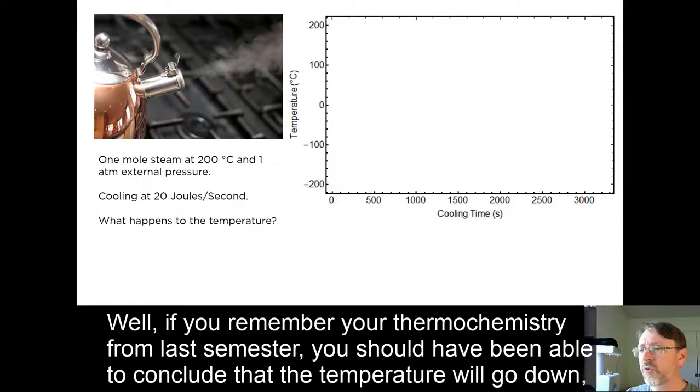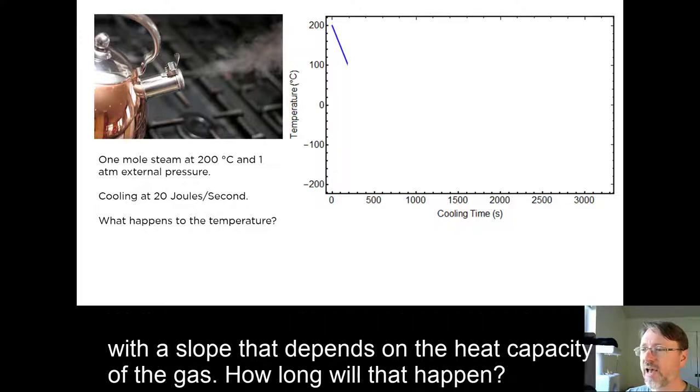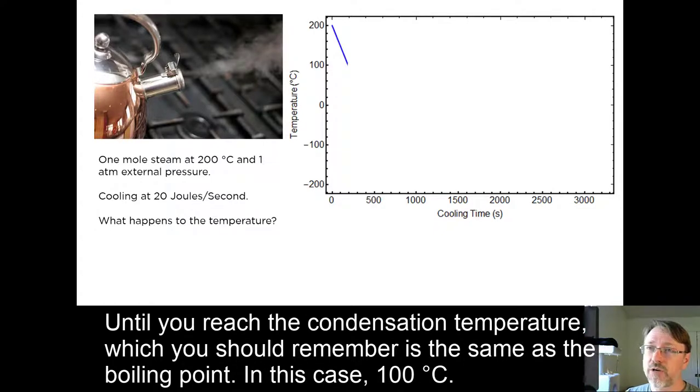Well, if you remember your thermochemistry from last semester, you should have been able to conclude that the temperature will go down with a slope that depends on the heat capacity of the gas. How long will that happen? Until you reach the condensation temperature, which you should remember is the same as the boiling point, in this case, 100 degrees C.